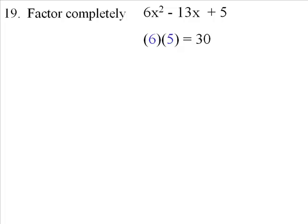Now we're going to find all the factors of 30. So 1 times 30 is 30. By the way, they have to add up to be a negative 13. So we want to use a negative 1 and a negative 30.